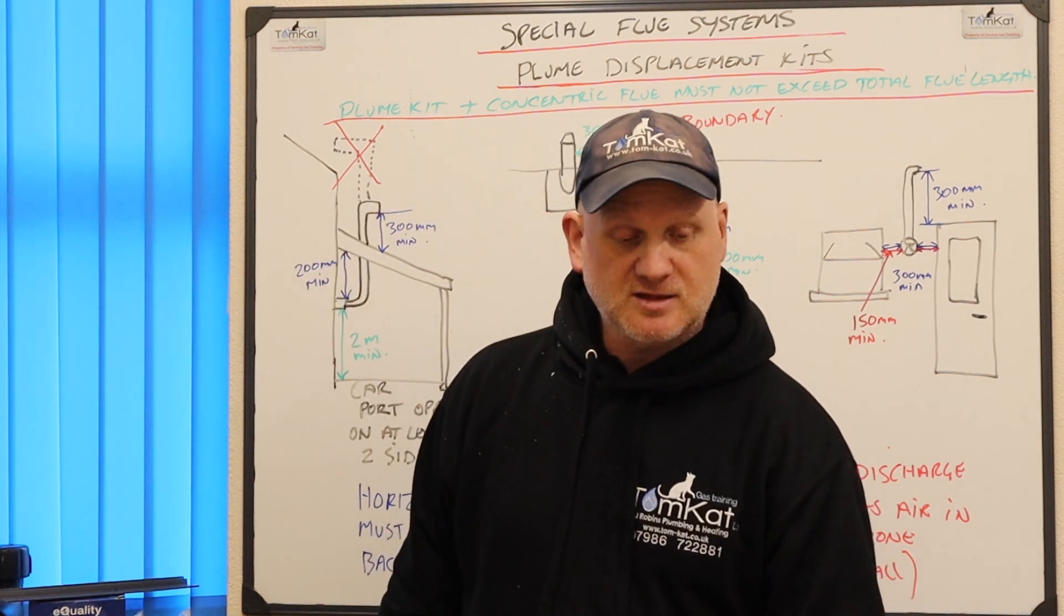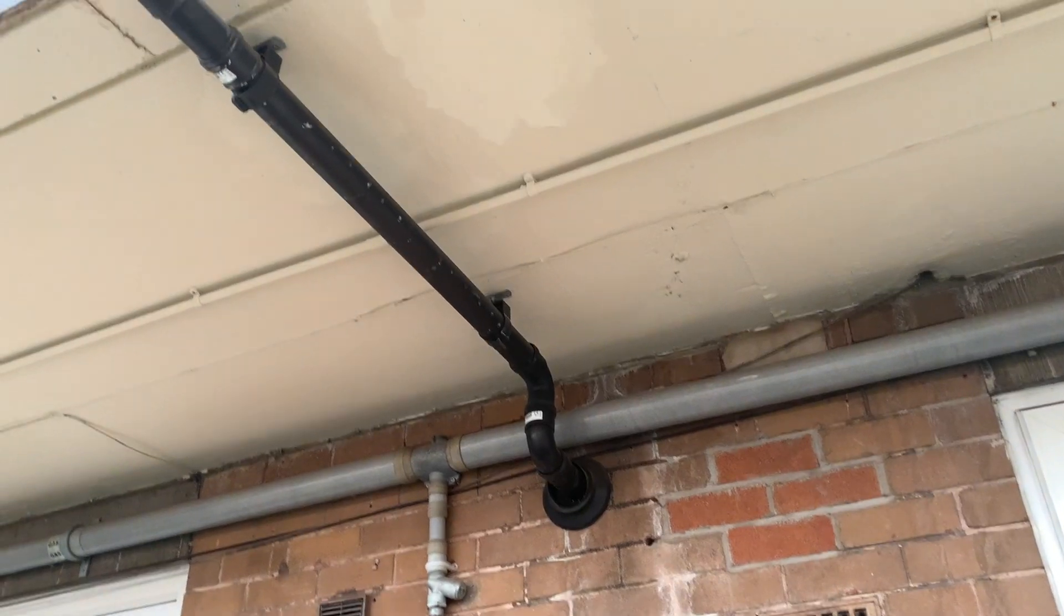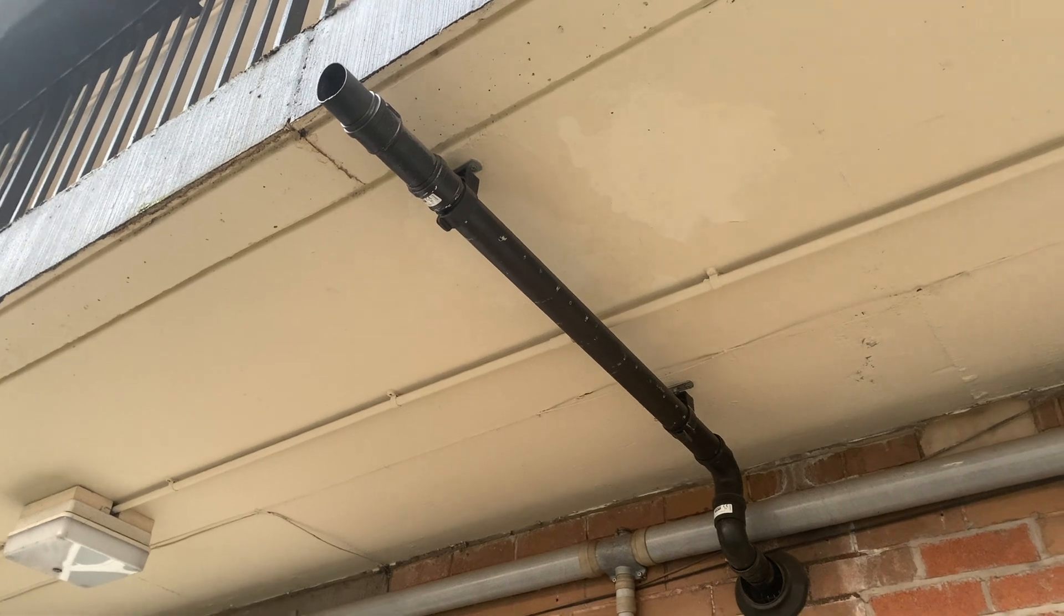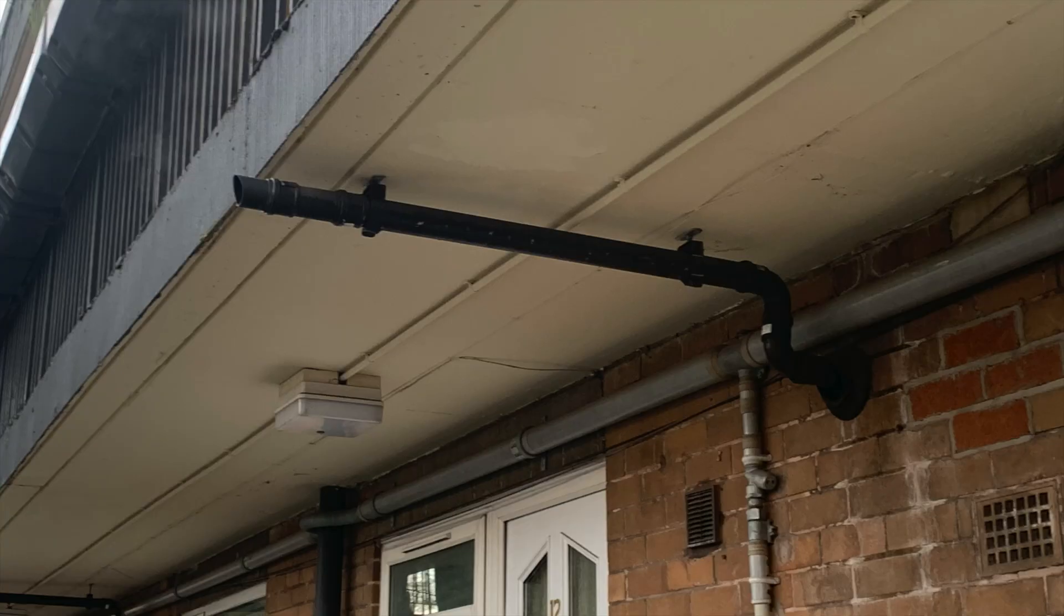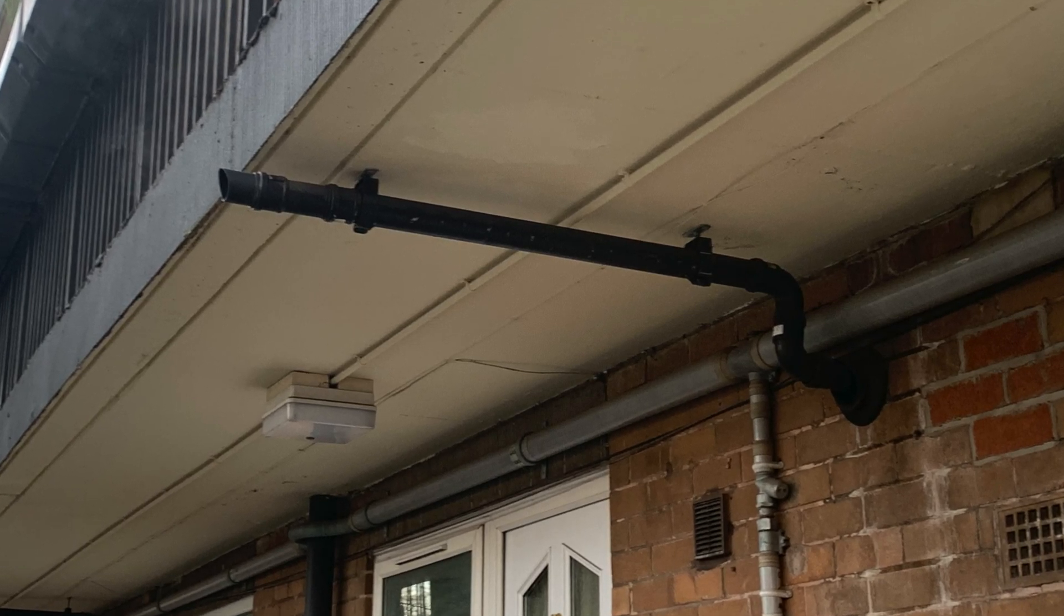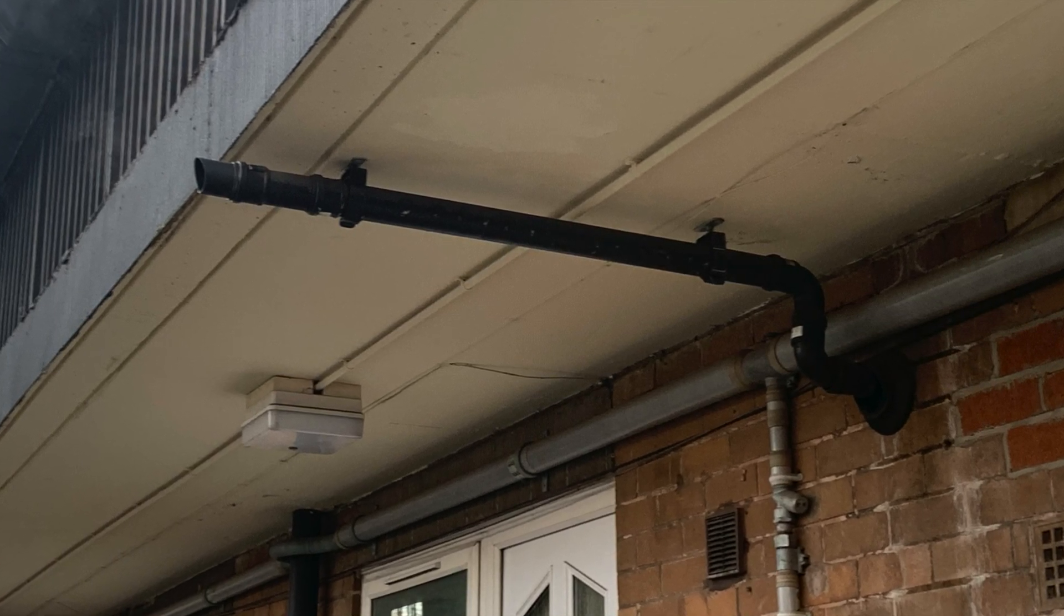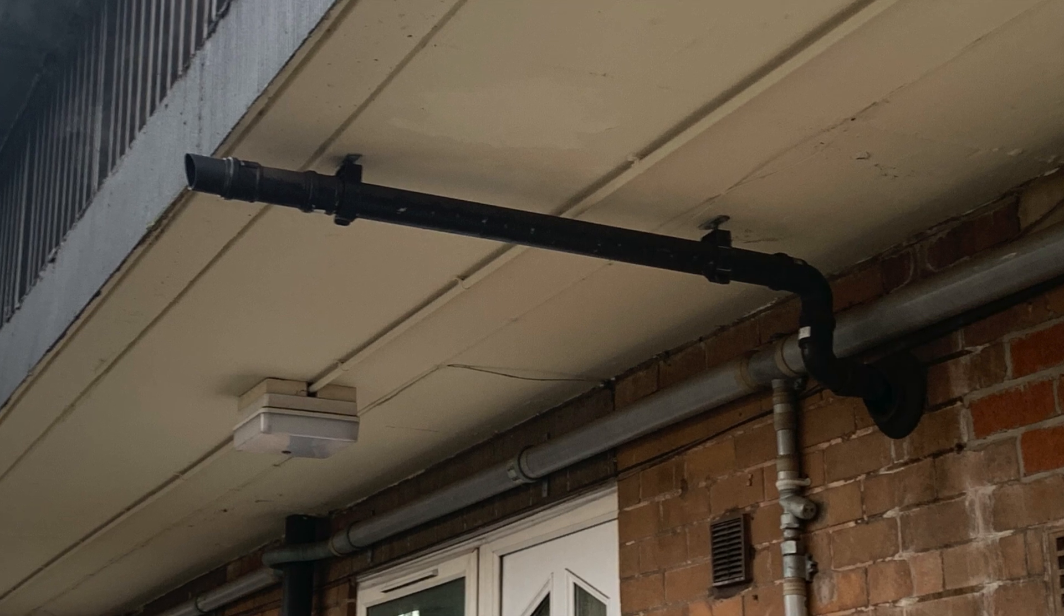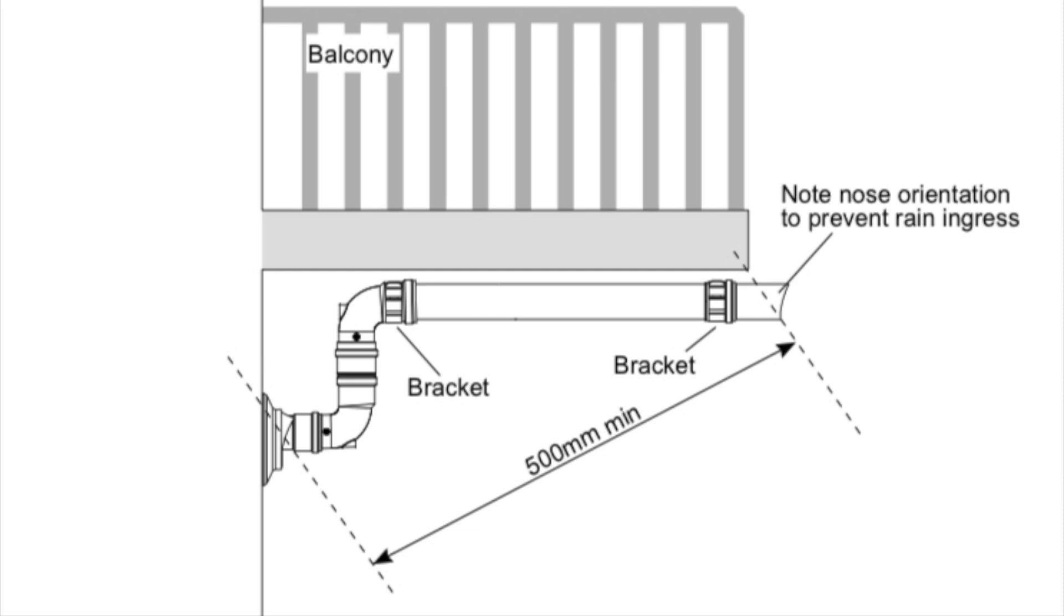So that's a quick look at flue management kits. Now also some of the boiler manufacturers produce specialist flues on the lines of the flue management kit and they call them balcony kits. So in this situation where we've got a public walkway and the flue is fluing under the balcony, they've extended the products of combustion out underneath the balcony and protruding out for more than 25mm. Also the flue length for this needs to be more than 500mm but always follow manufacturer's instructions when you're installing these specialist flue systems.